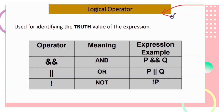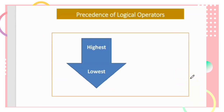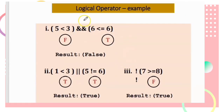Logical operators are used to identify the true value of an expression. There are three operators to know: AND (&&), OR (||), and NOT (!). Example expressions: p && q, p || q, and !p. For precedence of logical operators, NOT has the highest precedence, followed by AND, then OR.